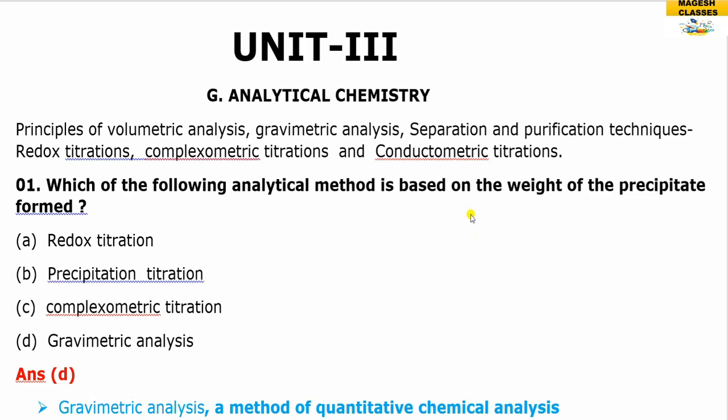The first question is: which of the following analytical methods is based on the weight of the precipitate formed? Options are redox titration, precipitation titration, compleximetric titration, and gravimetric analysis. Based on the weight of the precipitate, your answer is gravimetric analysis.